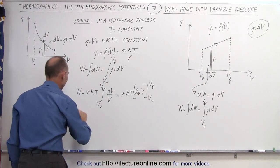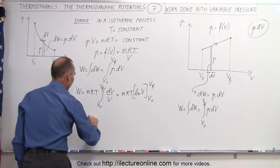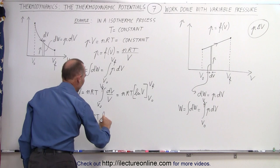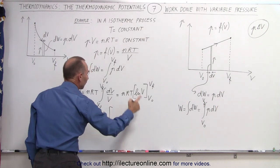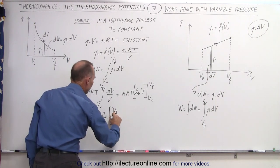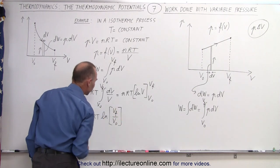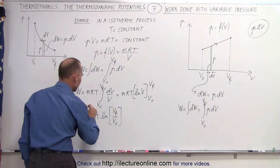Then we'll plug in the limits. We find that the work done is equal to nRT times the natural log of V final minus V initial, which can then be written as the natural log of V final over V initial.